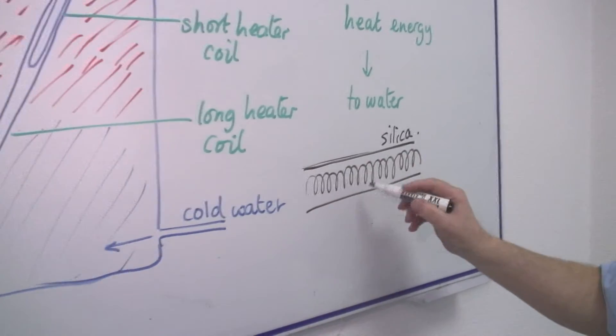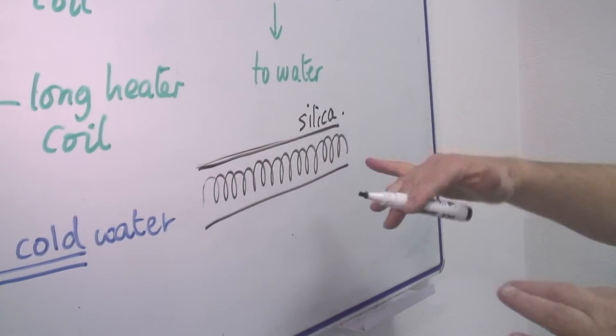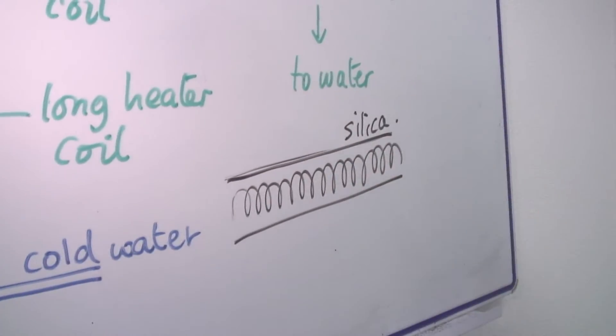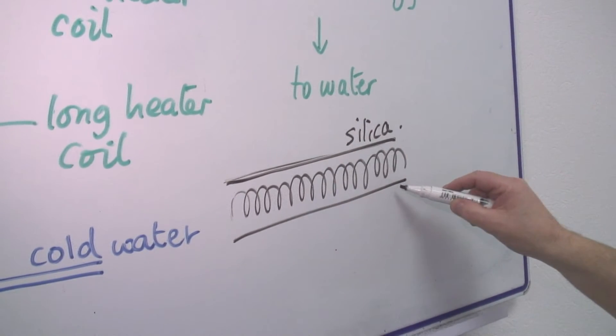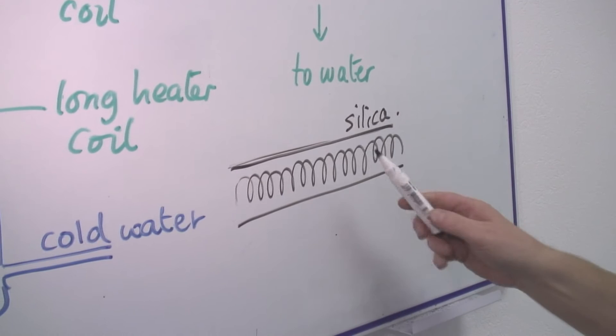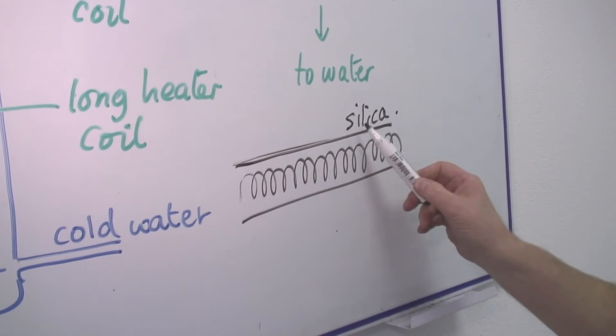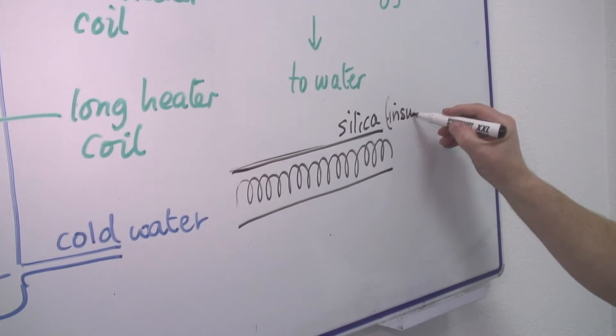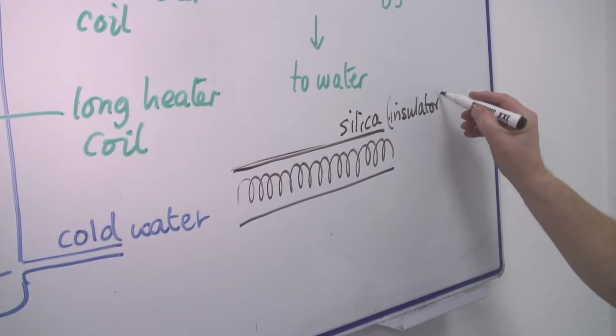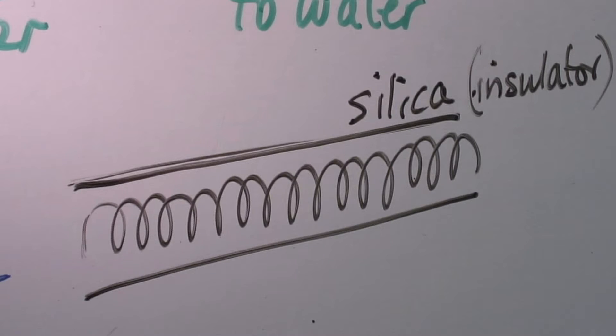Around this coil there is a kind of powder which keeps it intact. When this gets hot, the outside silica gets hot and the water gets hot. But you have to remember that silica is an insulator. That is, it does not conduct electricity and therefore makes the whole thing safe.